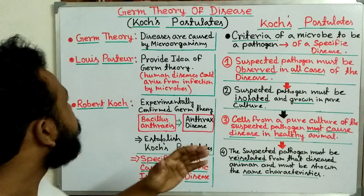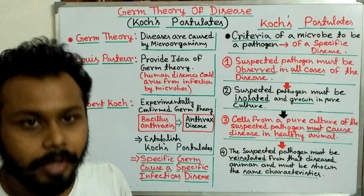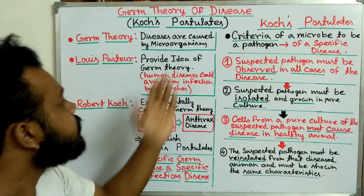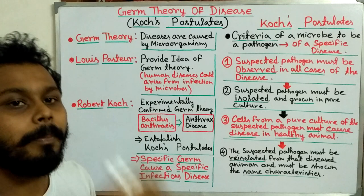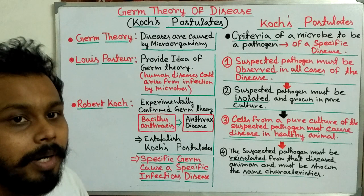Before the germ theory was published, people didn't even believe that disease could be caused by a microorganism. Then Louis Pasteur first provided this idea of germ theory. He said that human disease can be caused by some microorganisms, or by some germs or pathogens. This was first published by Louis Pasteur.